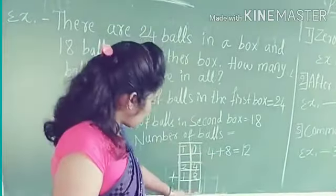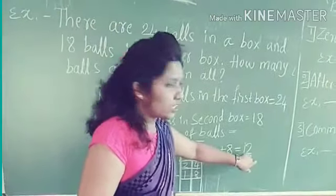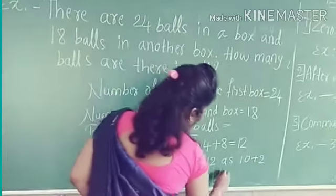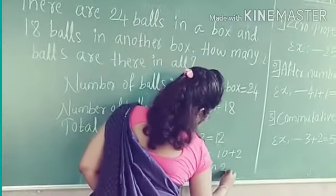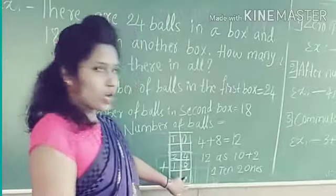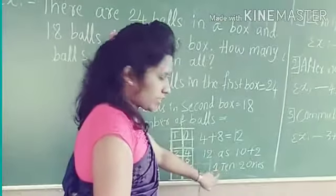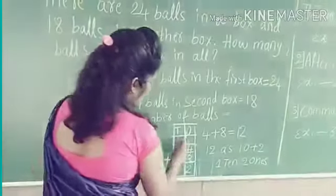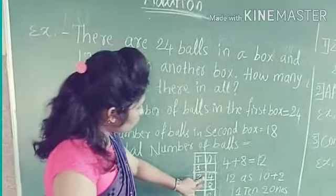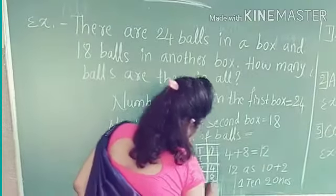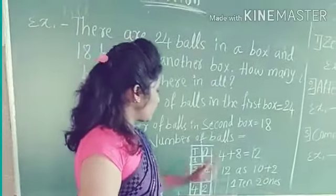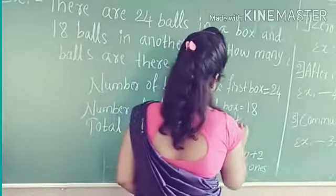4 plus 8 equals 12. We cannot write a 2-digit number at the ones place, so we regroup: 12 is 10 plus 2, meaning 1 ten and 2 ones. We write 2 at the ones place and carry 1 to the tens place. Then we add the tens place: 1 plus 2 plus 1 equals 4. The number 24 plus 18 is equal to 42. The total number of balls is 42.